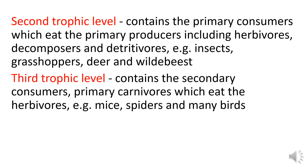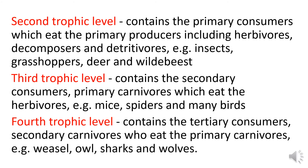The third trophic level contains the secondary consumers, or primary carnivores, which eat the herbivores — for example, mice, spiders, and many birds. The fourth trophic level contains the tertiary consumers, or secondary carnivores, who eat the primary carnivores — like weasels, owls, sharks, and wolves.